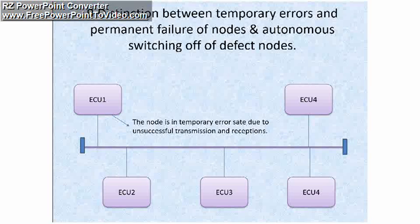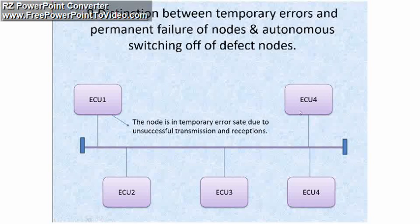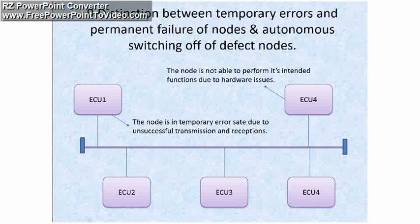The temporary error state means the node is not in an active state — the TEC and REC counter values are equal to or greater than 127. If the TEC and REC error counters are greater than 127, the node will be in a passive error state, which can be recovered by reinitializing the ECU. Permanent failure of a node means there are hardware issues and the node must be replaced with a new one.